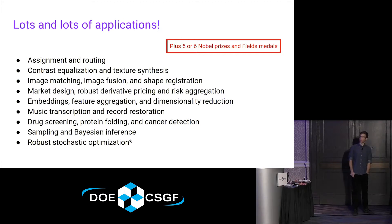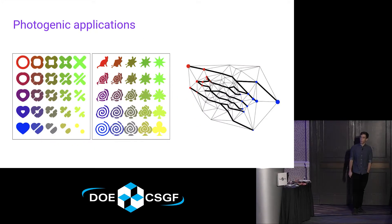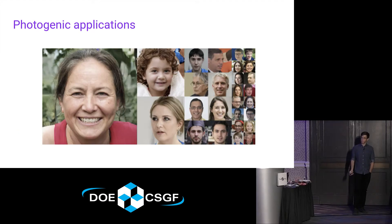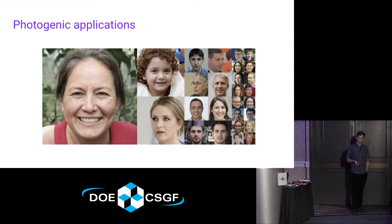There are maybe five to six Nobel prizes and Fields Medals associated with this area. Here are just a couple of photogenic applications. On the left we have optimal transport between various shapes. On the right we have an assignment problem where the red dots show distribution mu, the blue dots show distribution nu, and the lines give you the transport between the two. And finally, a Wasserstein GAN is a great example — these are synthetic faces generated not by a person but by a machine.